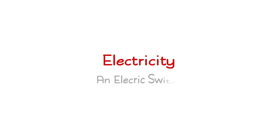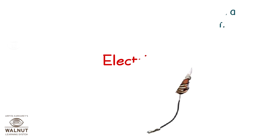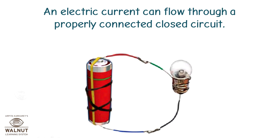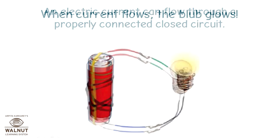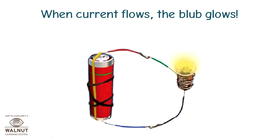Electricity and Electric Switch. An electric current can flow through a properly connected closed circuit. When current flows, the bulb glows.